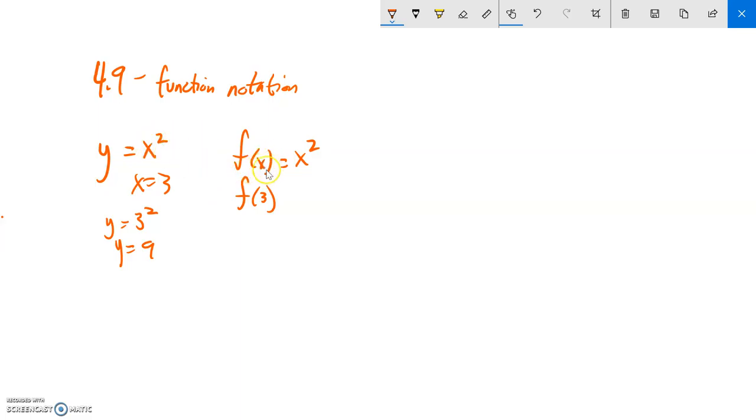So what that's saying is notice the x is a 3. So that just means x equals 3. So plug it in, 3 squared. 3 squared is 9. So f of 3 is 9.